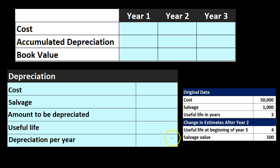Let's look at an example. Here's our data: cost of property, plant and equipment is $50,000, salvage value $1,000, useful life starting at three years. Then at the end of year two — the beginning of year three — we decide the useful life at that point has four more years to go. That is a change in estimate, and we also believe the salvage value is going to change from $1,000 to $500 at that point.